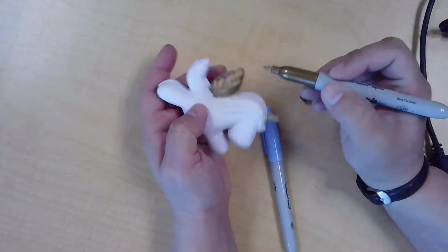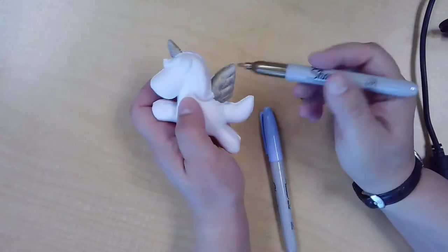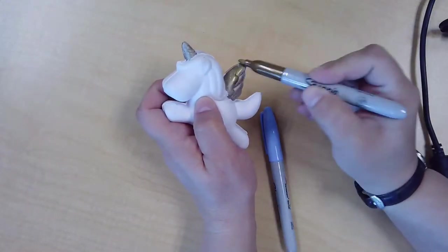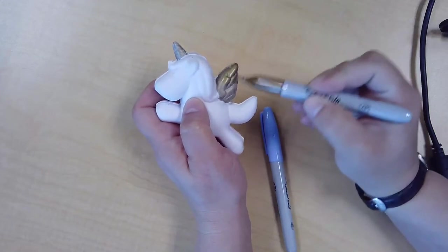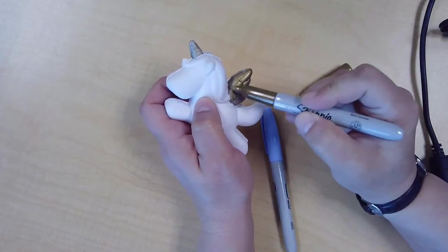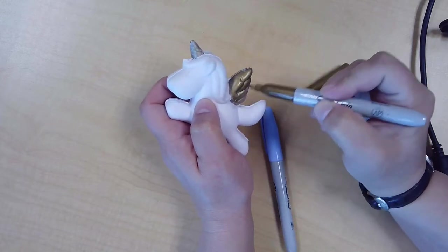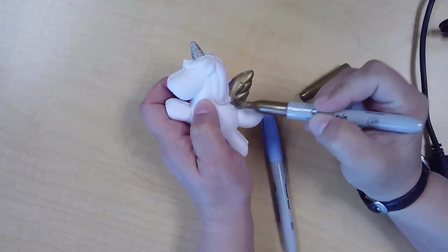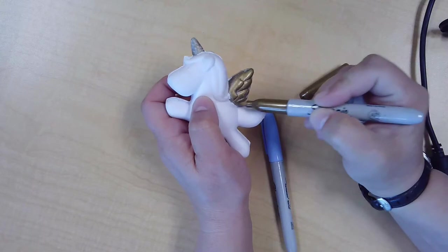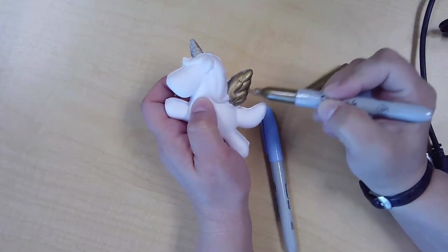The metallic markers give very good coverage. As you can see here, I'm going over this one a second time because I had done it a while back, and after you squish it around for a while, some of the marker will rub off on your hands. Not noticeably at the time, but after a while you notice it fading on your unicorn.